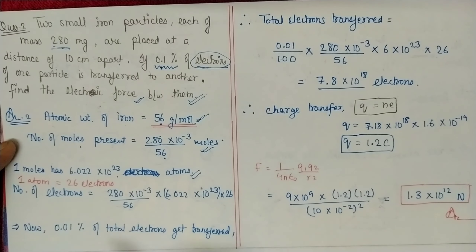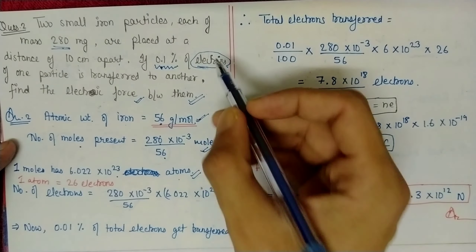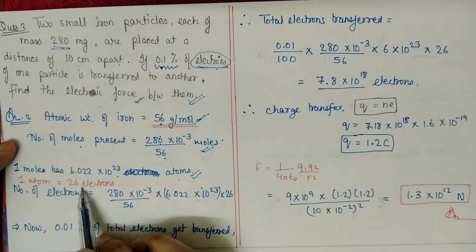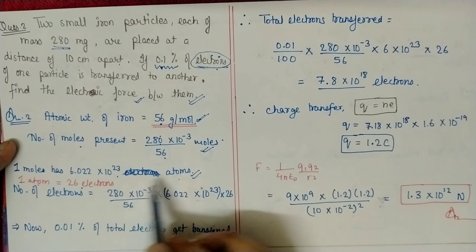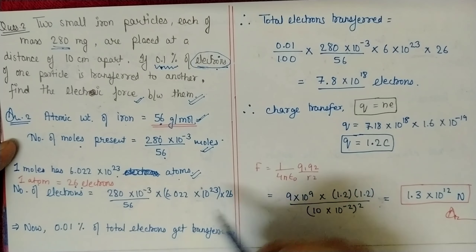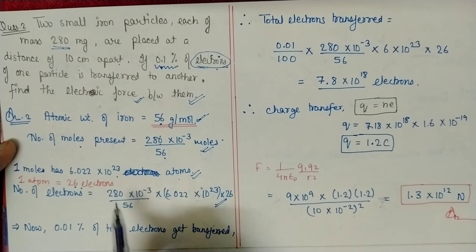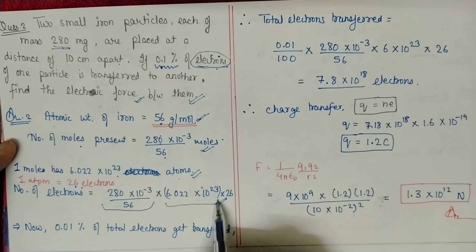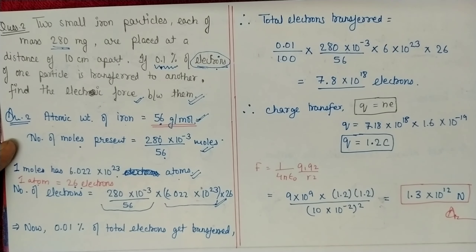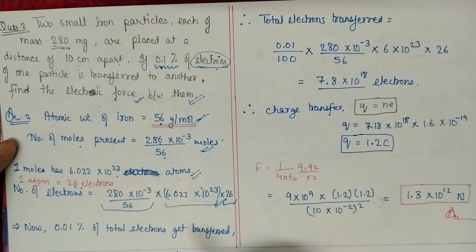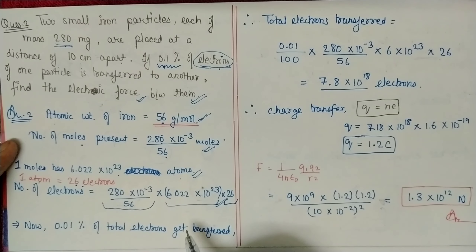We still need the number of electrons, not just atoms. Iron has atomic number 26, so each atom has 26 electrons. Multiply the total number of atoms by 26 to get the total number of electrons. So: total electrons = (280 × 10⁻³ / 56) × 6 × 10²³ × 26.